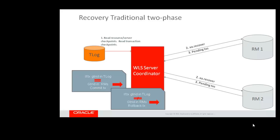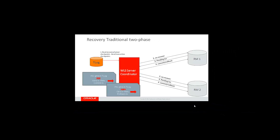If these match, then the recovery outcome is a commit. If they don't match, then the outcome is a rollback. Then commit and rollback are called on the resources in parallel, and once the outcome of that call is received, the transaction manager will remove the transaction checkpoint from the T-Log.